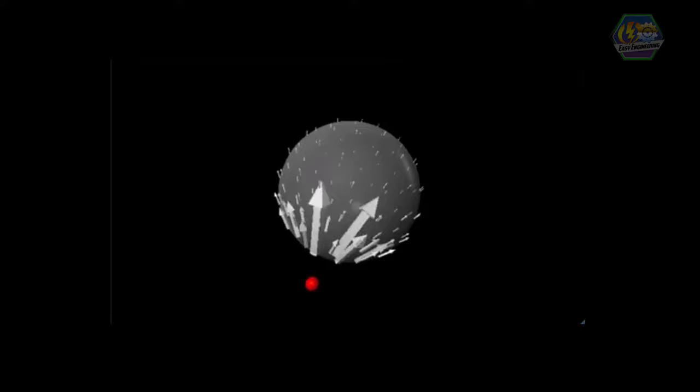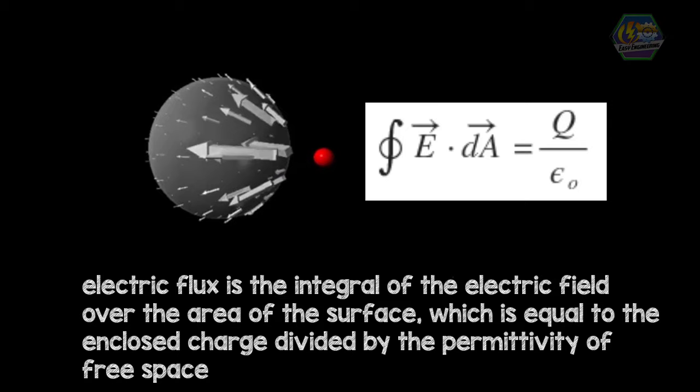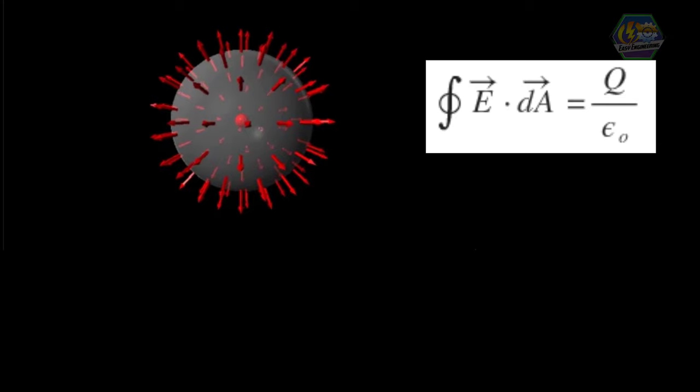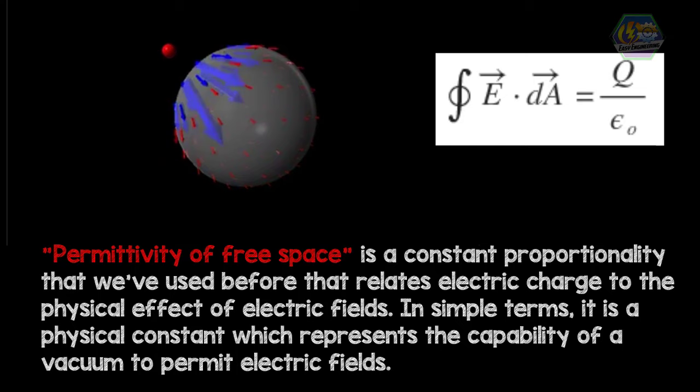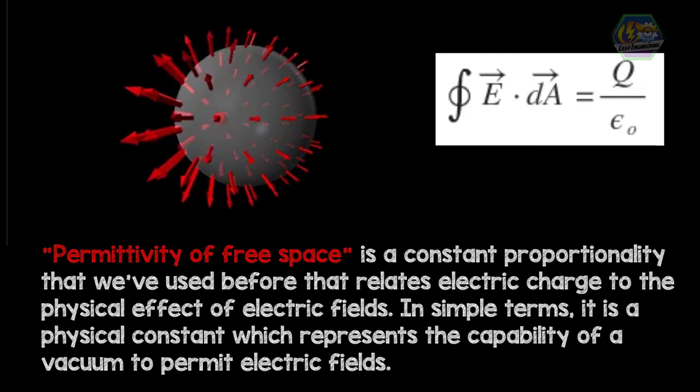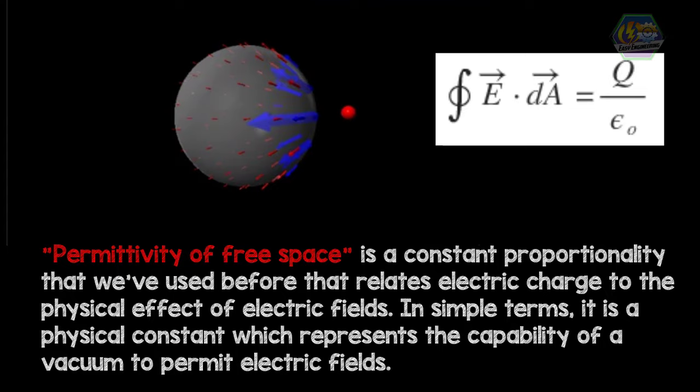Mathematically, this equation says that electric flux is the integral of the electric field over the area of the surface, which is equal to the enclosed charge divided by the permittivity of free space. The permittivity of free space is a constant of proportionality that relates electric charge to the physical effect of electric fields. In simple terms, it is a physical constant which represents the capability of a vacuum to permit electric fields.